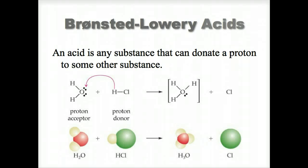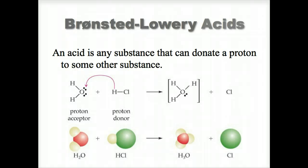When HCl dissociates in water, it forms chloride ions, which is a weak base. The chloride ion is called the conjugate base of hydrochloric acid.